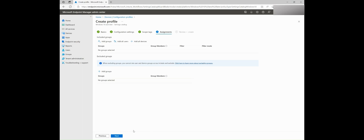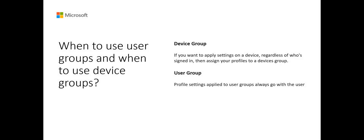What you see on the next page is the targeted audience for this device configuration profile. Many users ask when to use user groups and when to use device groups. The answer depends on your goal. If you want to apply settings on a device regardless of who is signed in, then assign your profiles to a devices group. Settings applied to device groups always go with the device and not the user, no matter if there are zero or many users. Profile settings applied to user groups always go with the user. If a user has multiple devices on the same platform, then you can use filters on the group assignment.